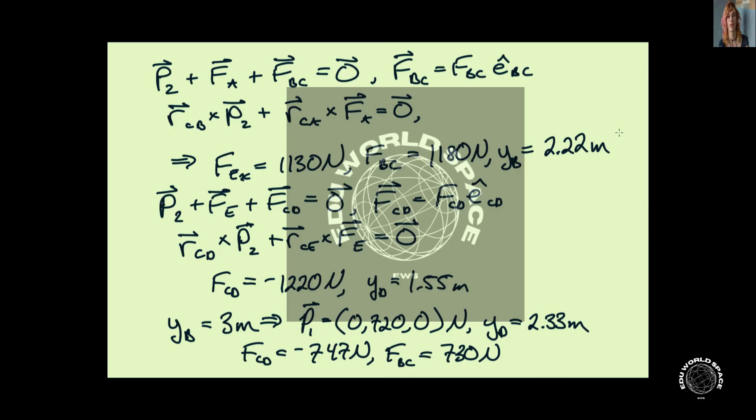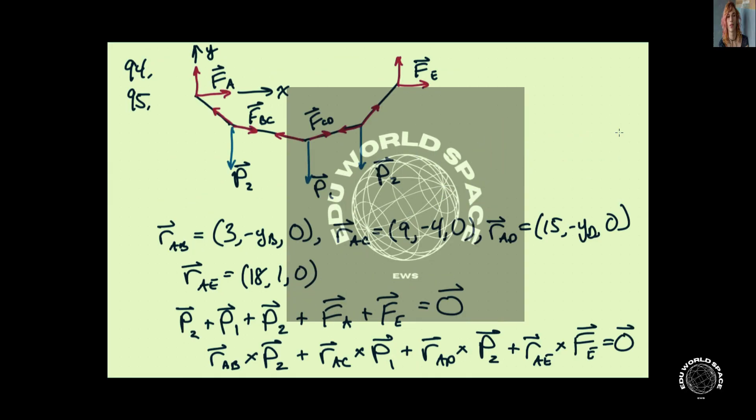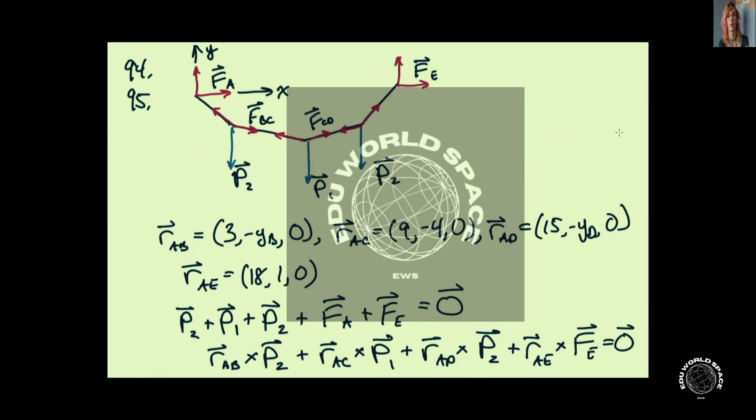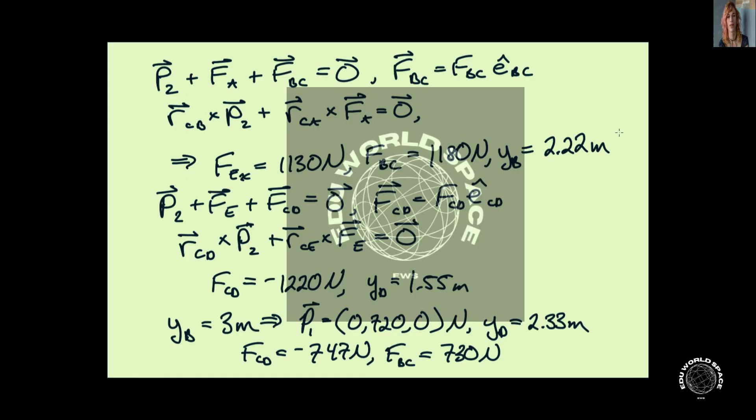This will give us another three equations. One of them is redundant, but we can then extract the information for at least the first part of the problem. And that is that we get YB, this distance here, is 2.22 meters. We can also figure out what the horizontal load at each of these supports is, and that is 1,130 newtons. And then the interior load in the cable from, in the rope from B to C is 1,180 newtons.